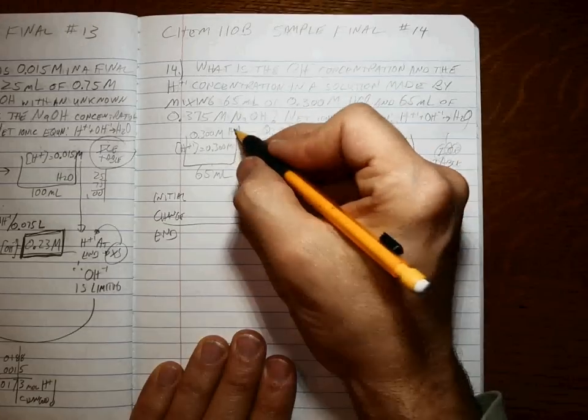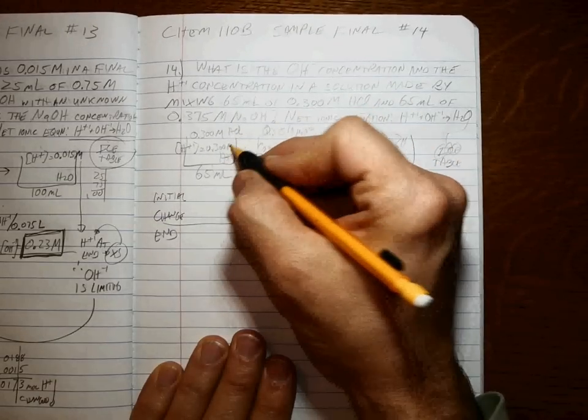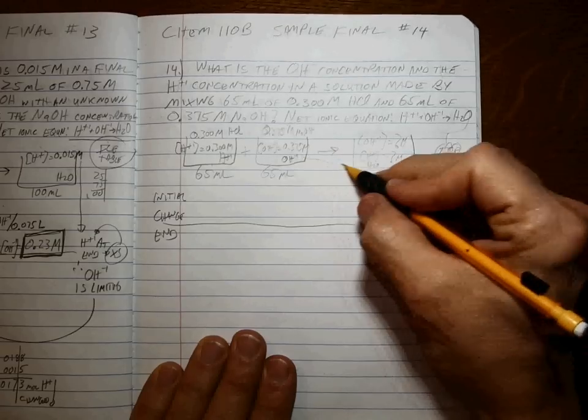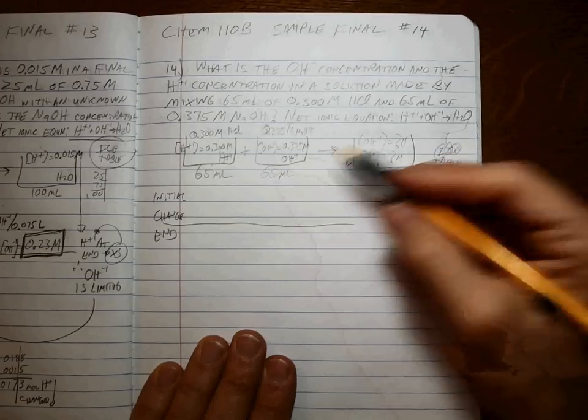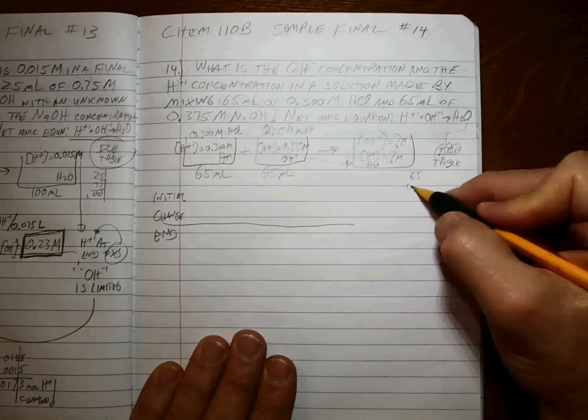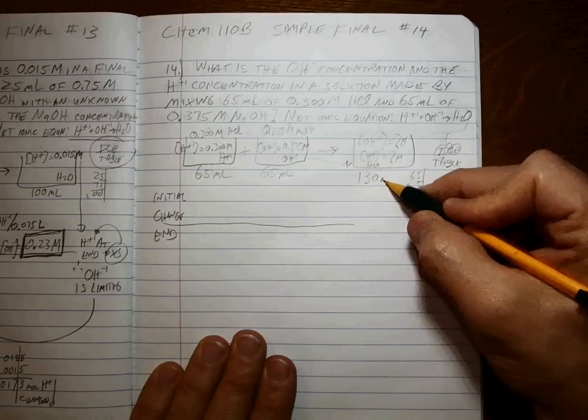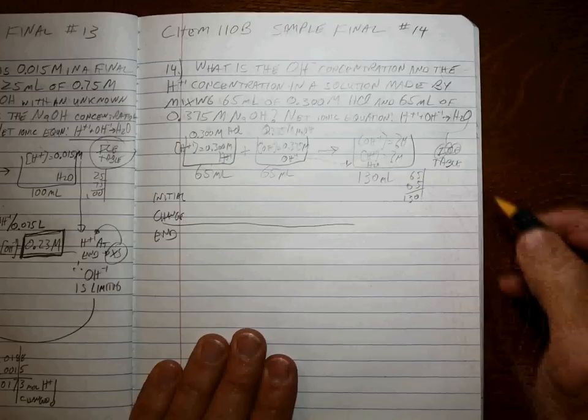We're going to keep track of the H-plus from this beaker and the OH-minus from this beaker. That reaction turns it into water. And 65 plus 65 is 130 milliliters.